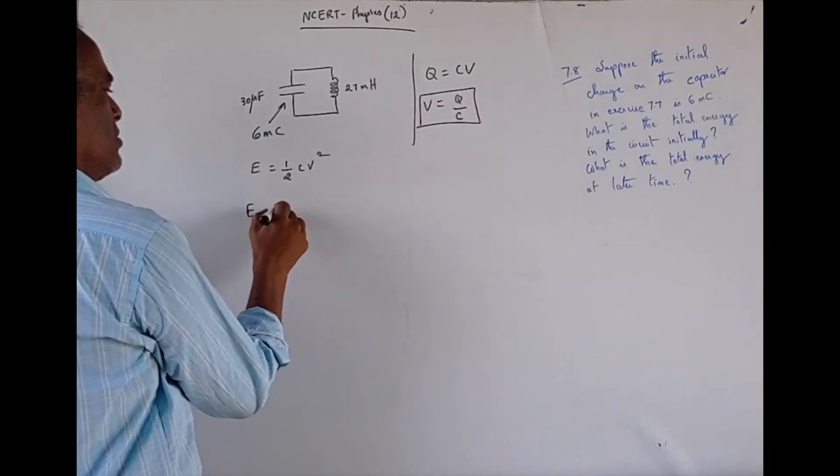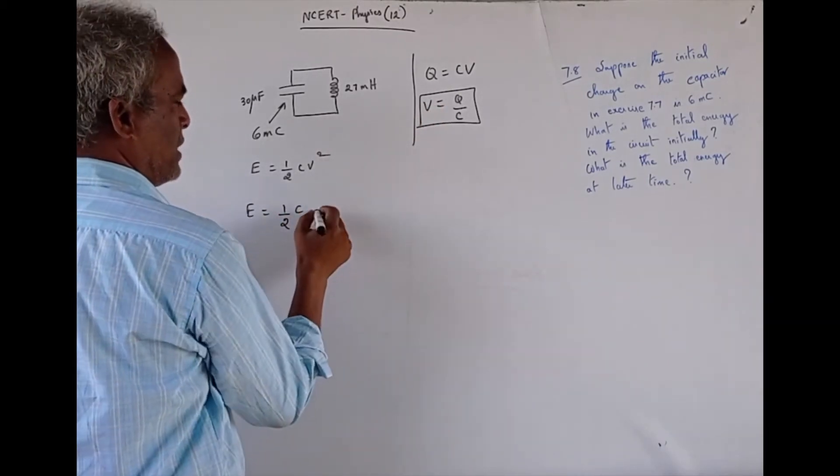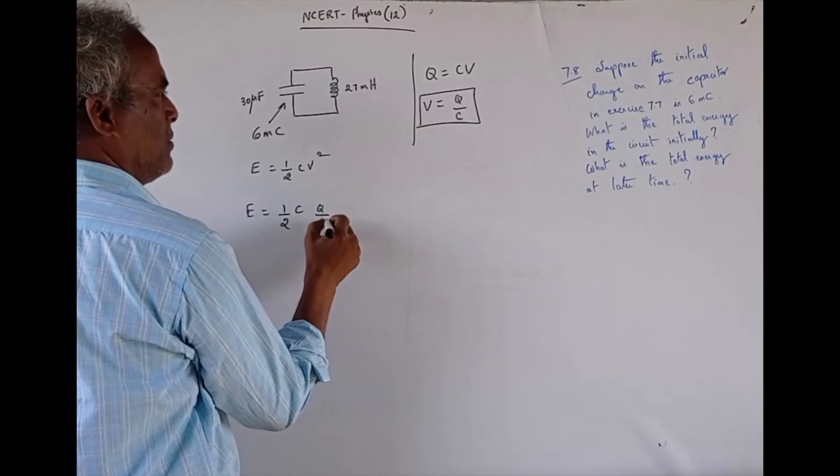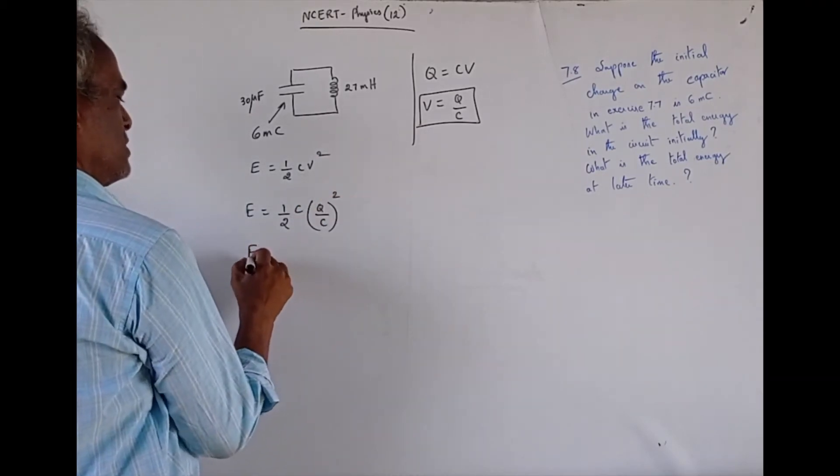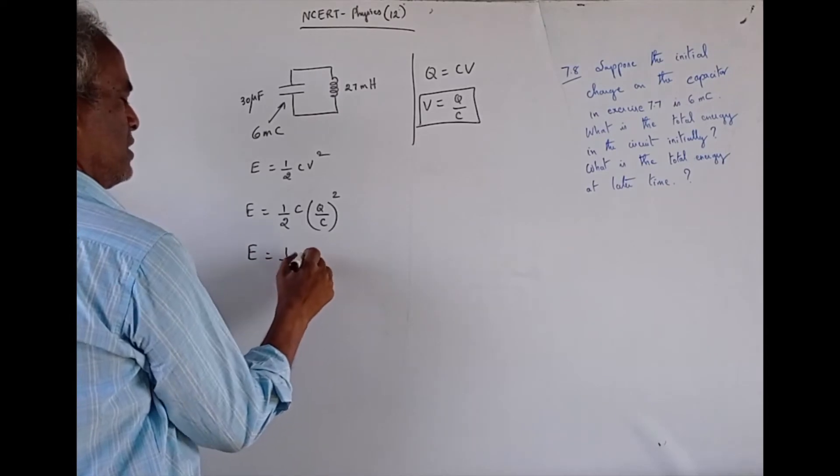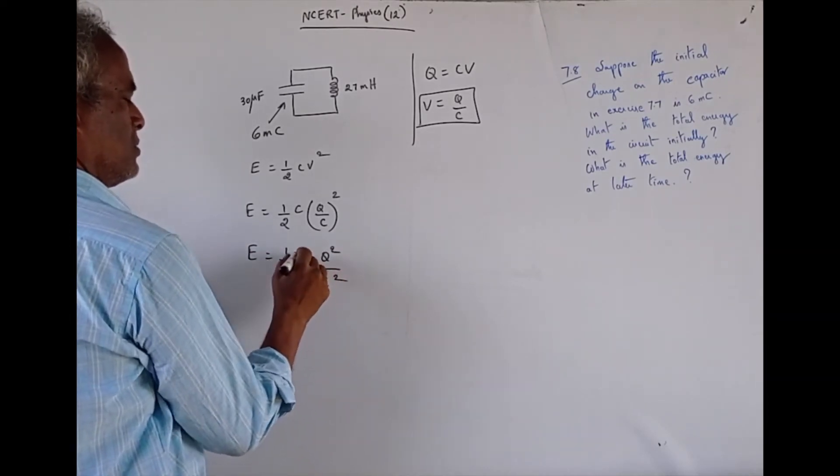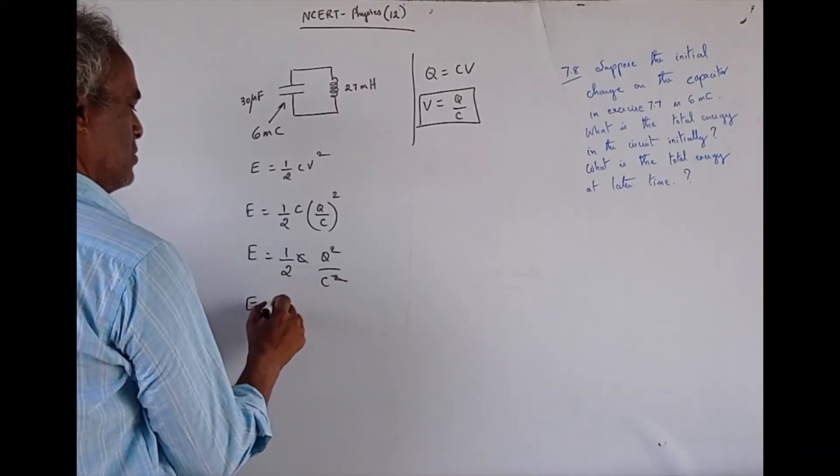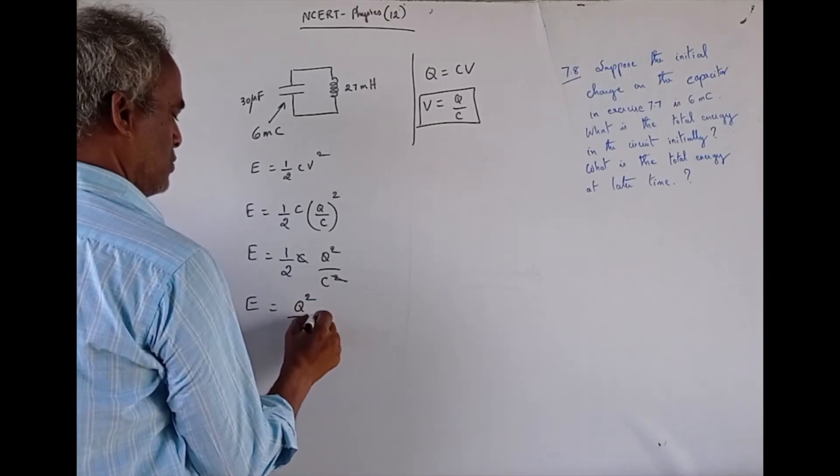This value you substitute here. So, energy is equal to half C. In the place of V, we have Q by C whole square. So, energy is equal to half C, Q square by C square. So, this term will get cancelled. So, energy is equal to Q square by 2C.